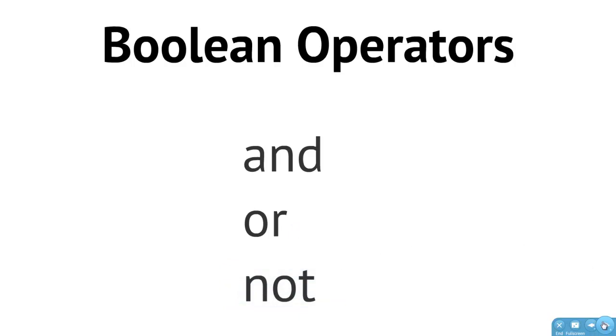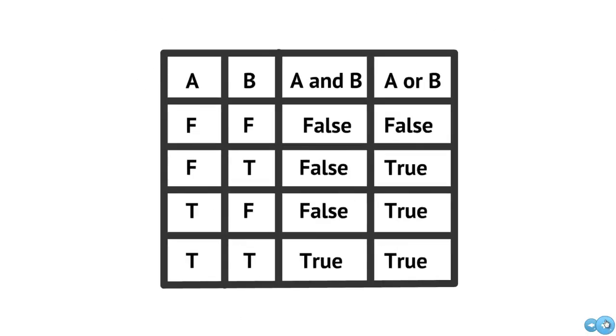With the AND and the OR, these are what we call binary operators, so they require two operands — something on the left-hand side and something on the right-hand side. Whenever we start talking about Boolean operators, we want to look at what's called a truth table to see what happens with regard to what expression we have on the left-hand side and the right-hand side, whether they're true or false.